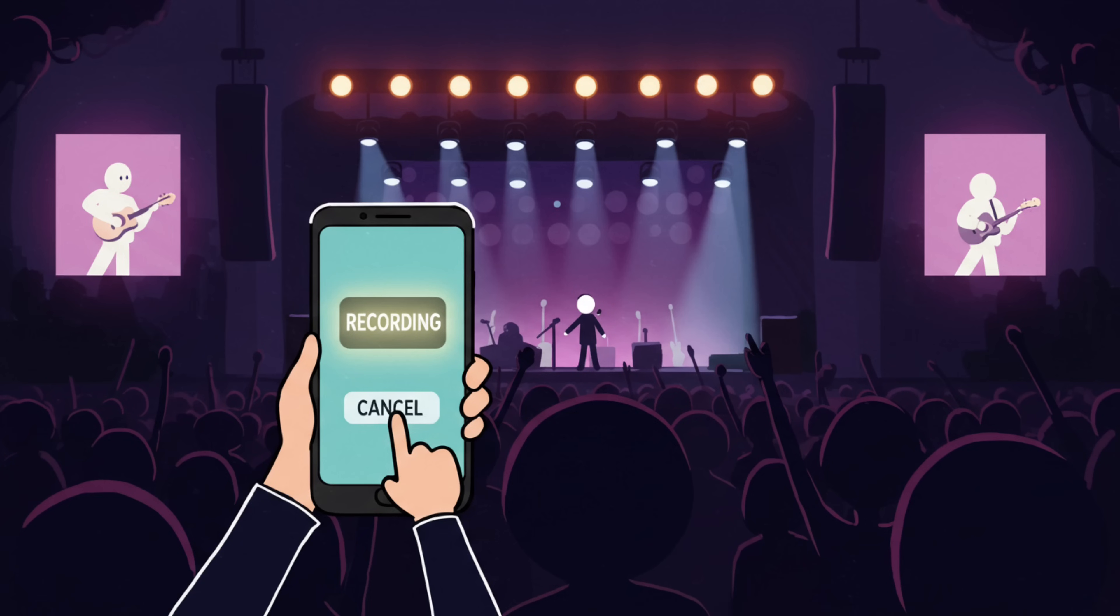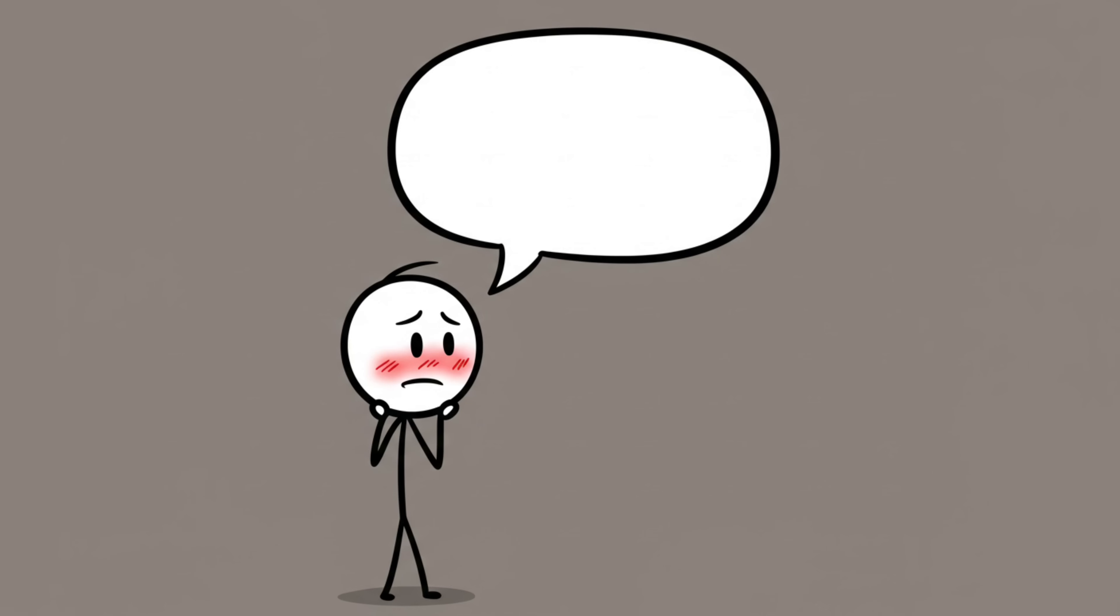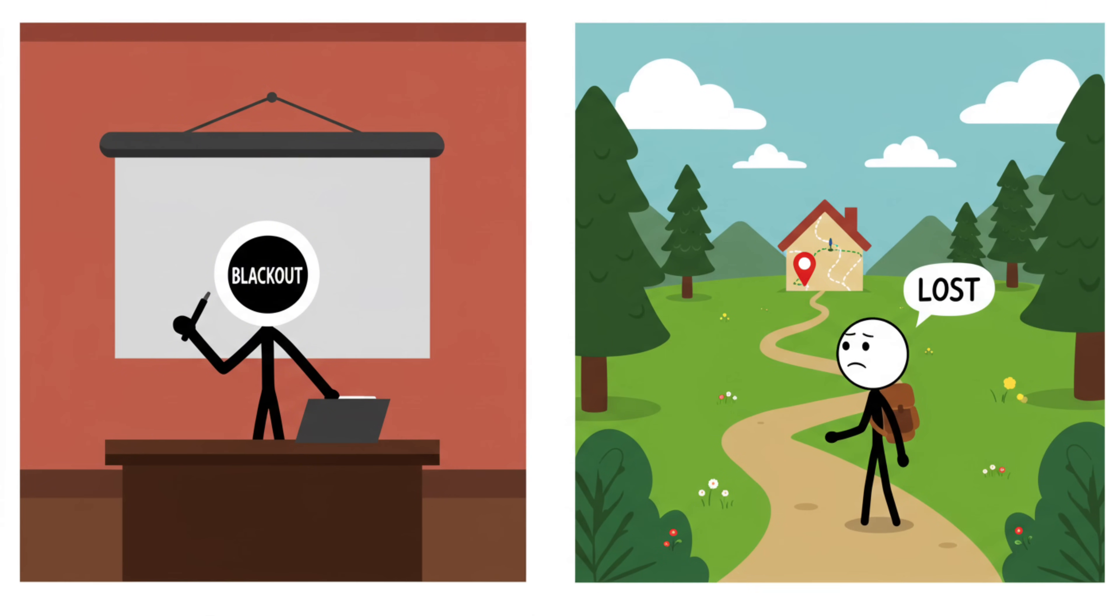It's like hitting record on your phone during a concert and then realizing later you never actually pressed the button. This is why some people can't remember parts of traumatic events. Your brain decided survival was more important than creating a scrapbook. It's also why you might forget embarrassing little stress spikes, like blacking out during a presentation or forgetting how you got home after a nerve-wracking night.